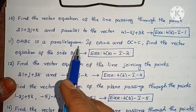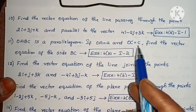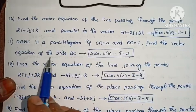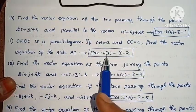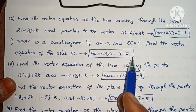Next: OABC is a parallelogram. If OA equals to a and OC equals to c, find the vector equation of the side BC. Exercise 4B, problem 2.